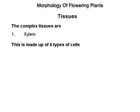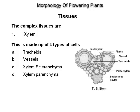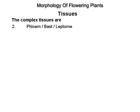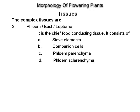Xylem is made up of four types of cells: tracheids, vessels, xylem sclerenchyma and xylem parenchyma. Phloem or bast or leptome is the chief food conducting tissue. It consists of sieve elements, companion cells, phloem parenchyma and phloem sclerenchyma.